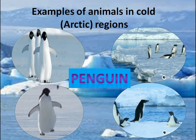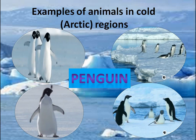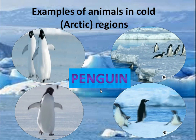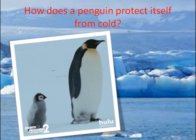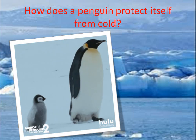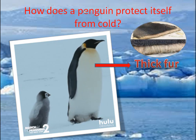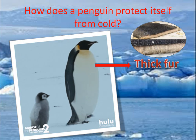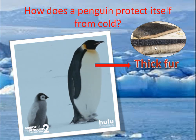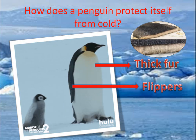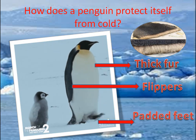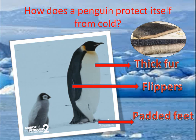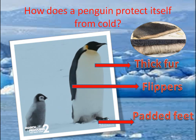The second example is the penguin. How can penguins live in the cold Arctic region? A penguin has thick fur — you can see how thick the skin under its wings is — which helps it protect itself from the cold. Secondly, it has flippers. Thirdly, it has padded feet to walk on cold snow. These three features help the penguin protect itself from the cold.